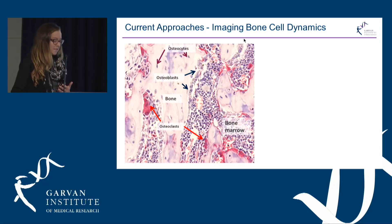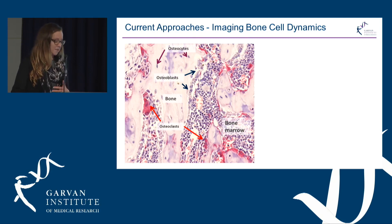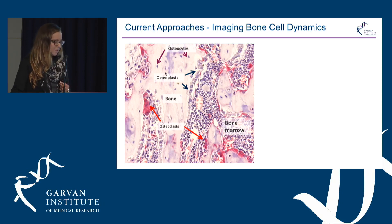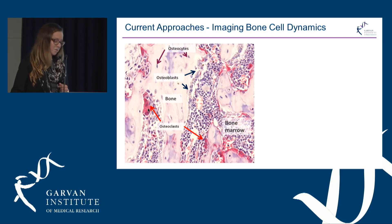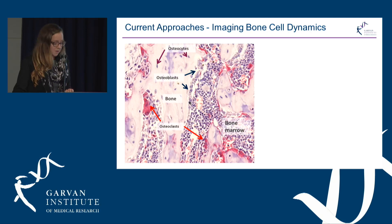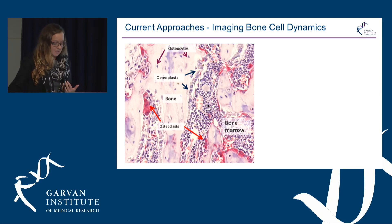For many decades we've been using histological techniques to understand how these cells behave inside bone tissue. This is a very thin two-dimensional slice of bone tissue demonstrating these cells. The pale pink area is bone tissue with osteocytes sitting in that matrix. The osteoclasts are stained here in red — the bone-resorbing cells. And we see these square-shaped osteoblasts forming new bone, surrounded by the bone marrow space where white blood cells live.